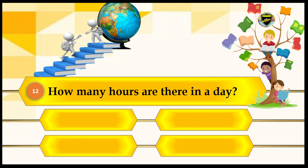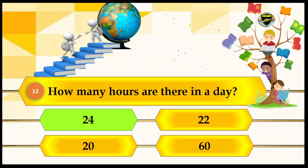How many hours are there in a day? Your options are 24, 22, 20, and 60. The answer is 24. Let's lock it. That's the correct answer — we have 24 hours in a day.